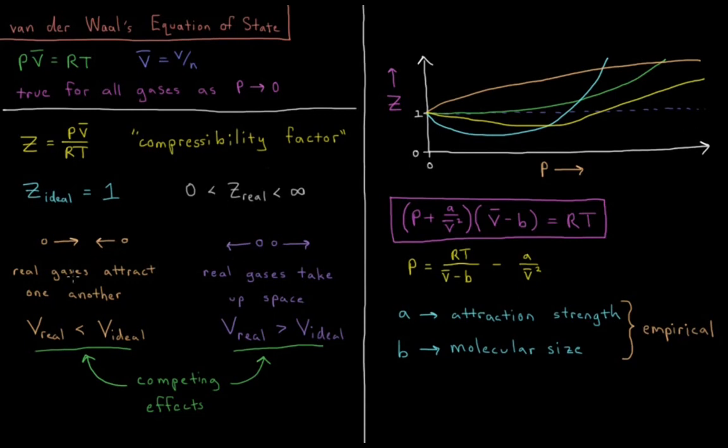There are two forces that are going to compete with each other in order for this non-ideal behavior to result. One is that gas particles are typically attracted to one another by some extent. There's some weak, non-covalent attraction to one another.